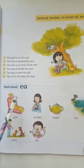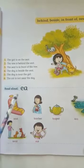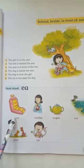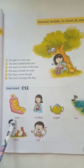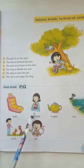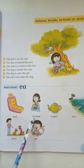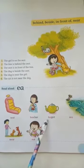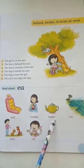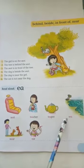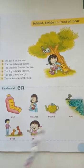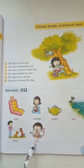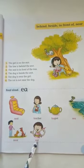Now we will read the words given below with the help of E and A. Let's start. Seat. Teacher — T-E-A-C-H-E-R. Teapot — T-E-A-P-O-T. Seat. Near — N-E-A-R. Ear — E-A-R.